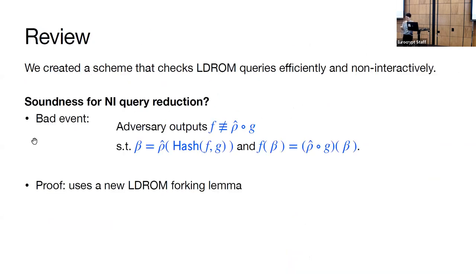As a review, we've constructed a non-interactive scheme that batches the verification of low-degree oracle queries. Proving soundness of the scheme ends up being the technical bulk of the paper. Specifically, we have to show that the bad event written in blue on the slide doesn't happen. Proving this requires a new forking lemma for the low-degree random oracle. In our paper, we proved that this forking lemma is as good as the standard forking lemma for random oracles.